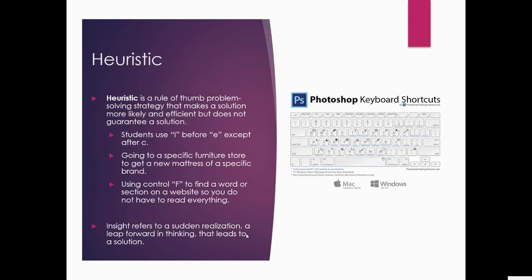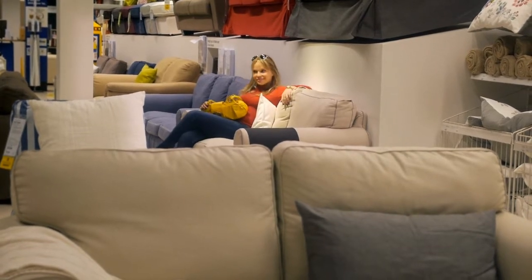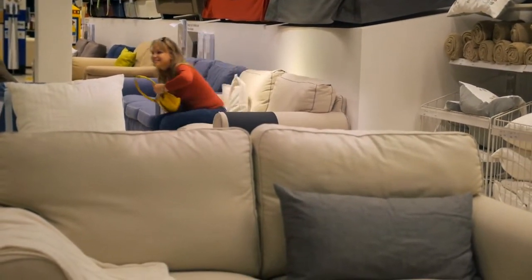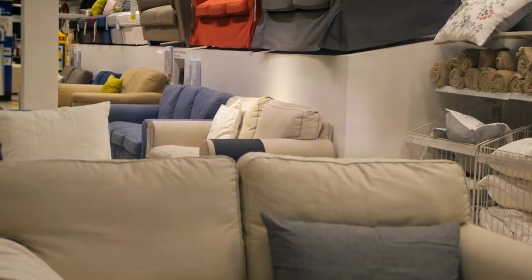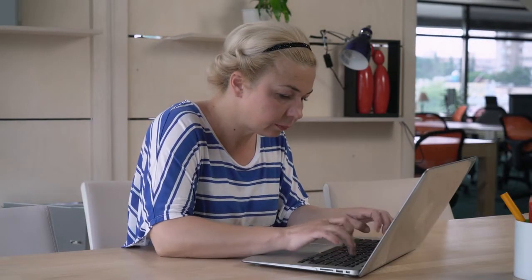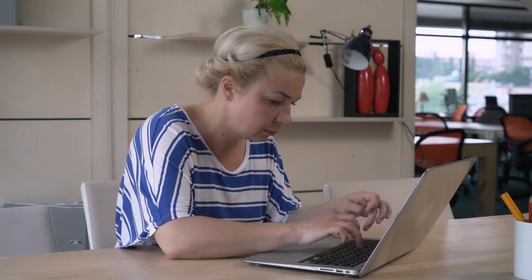Heuristics is a rule-of-thumb problem-solving strategy that makes a solution more likely and efficient, but does not guarantee an actual solution. Students use the saying 'I before E except after C.' Going to a specific furniture store for a specific mattress brand, or a specific car dealership for a specific brand of car — you know where to go. Using Control+F to find a word on a website so you don't have to read the entire thing is a shortcut — a heuristic.